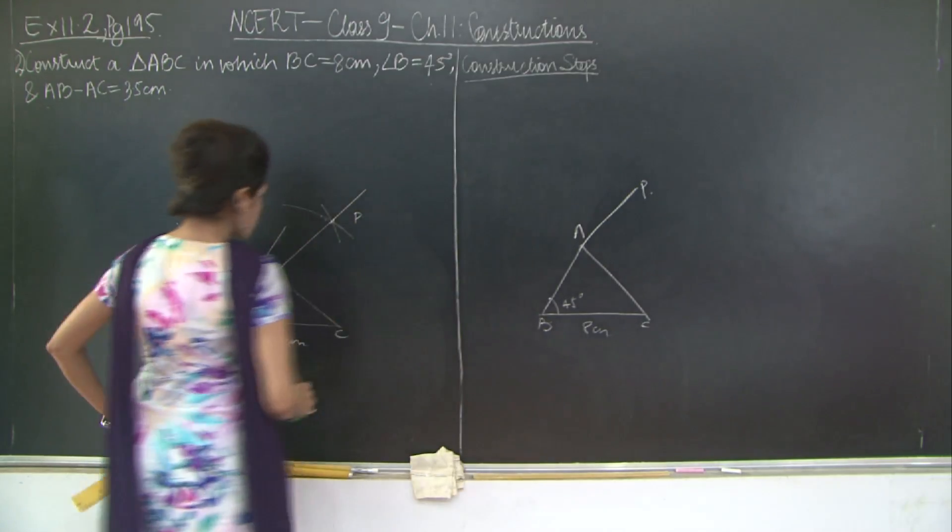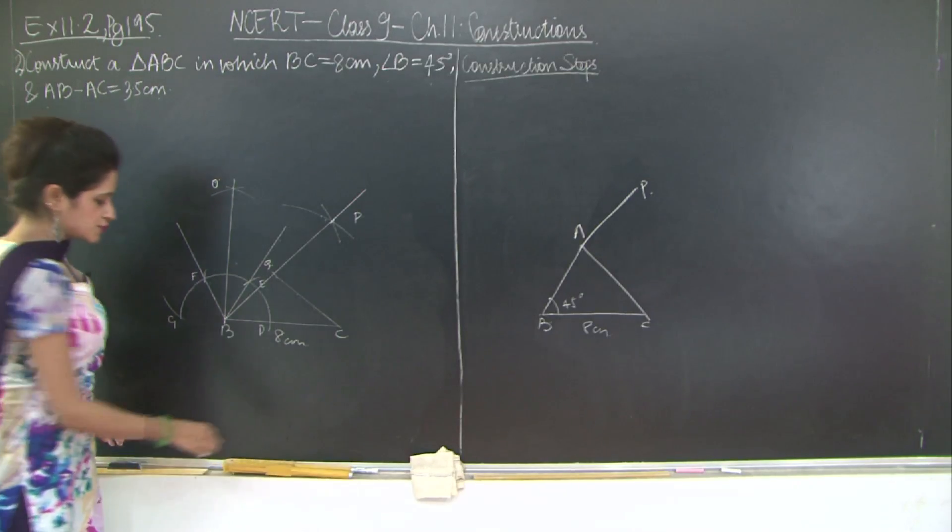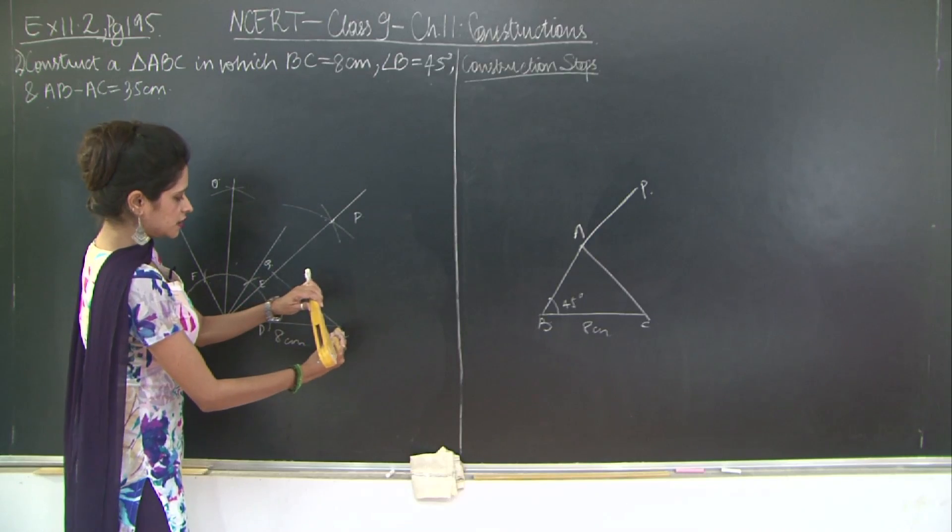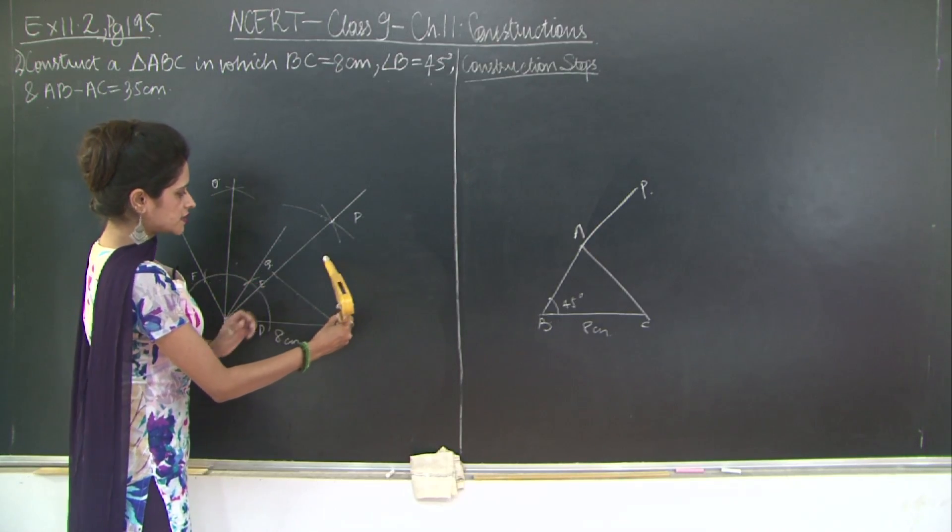Now the next thing to do is that we will draw the perpendicular bisector of QC. So how do you draw the perpendicular bisector of QC? With C as your center and Q as your center, one at a time, you cut arcs.